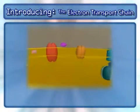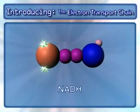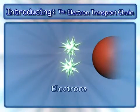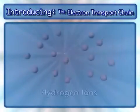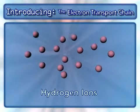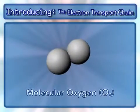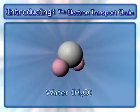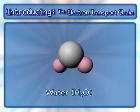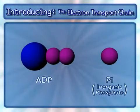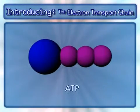Other key components in this process are NADH and the electrons from it, hydrogen ions, molecular oxygen, water, and ADP and inorganic phosphate, which combine to form ATP.